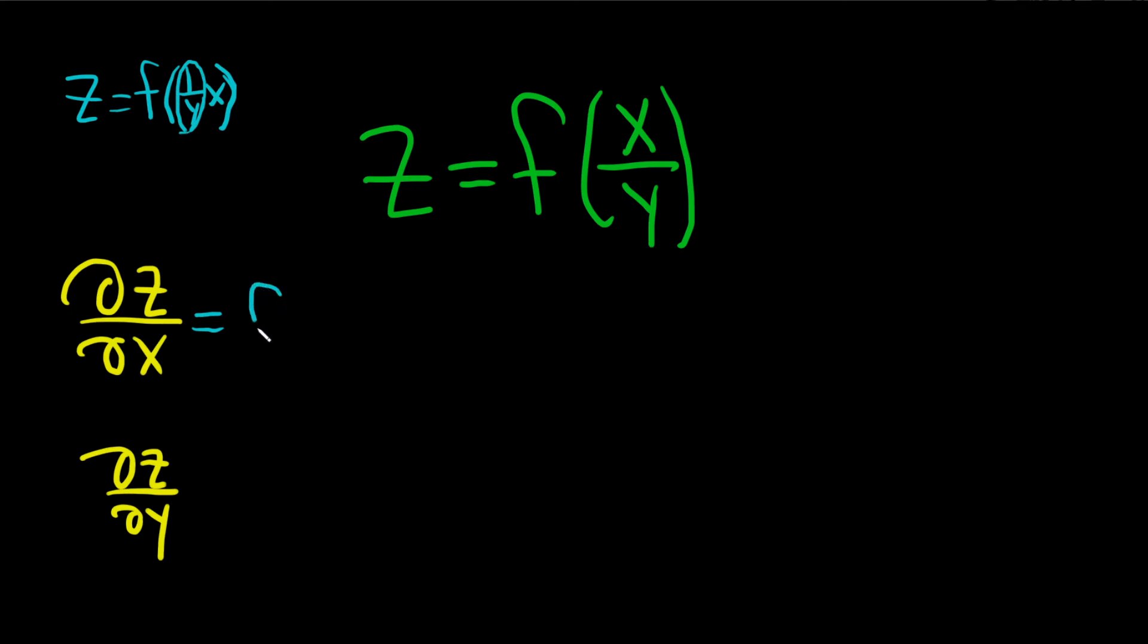So let's do it. We take the derivative of the outside, we leave the inside untouched. And then times, now thinking of the inside piece like this, the derivative of x is 1, the 1 over y is a constant, so we just get 1 over y.